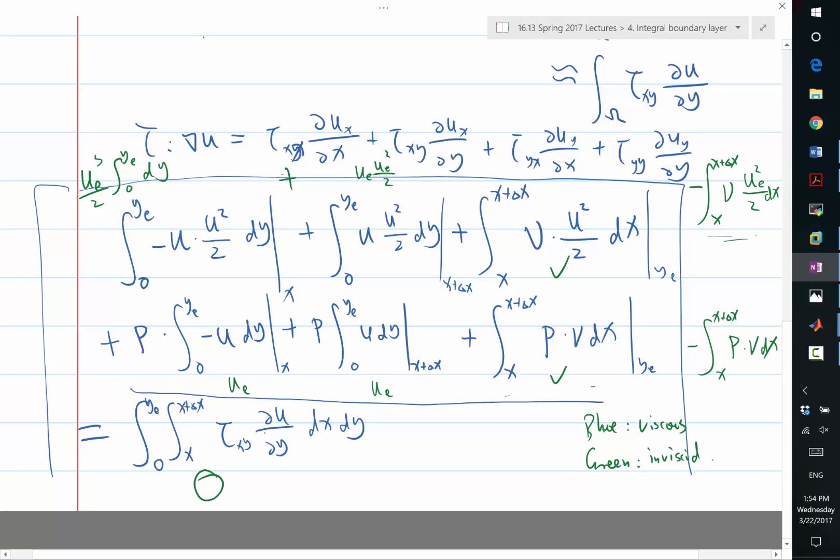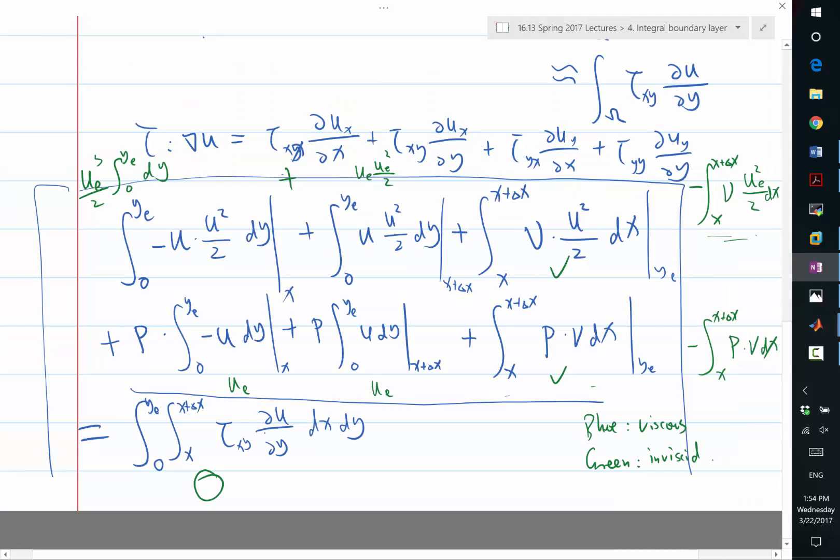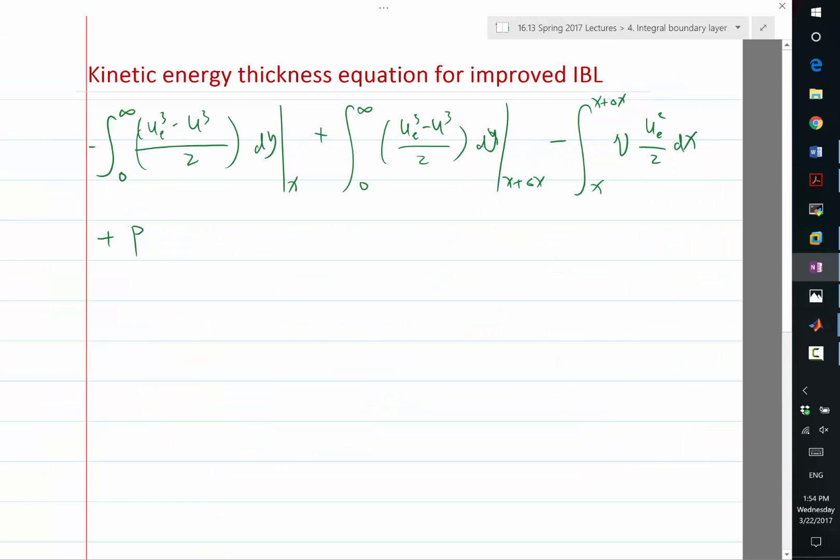The ye term cancels and we get a negative term coming from the wall, from x to x plus delta x of velocity times half of ue squared dx. So that's the kinetic energy flux. And the pressure force is plus p times integration of ue minus u dy at x, minus p times integration ue minus u dy at x plus delta x, minus p times v dx. This whole thing is equal to minus the viscous dissipation.